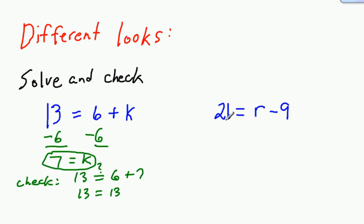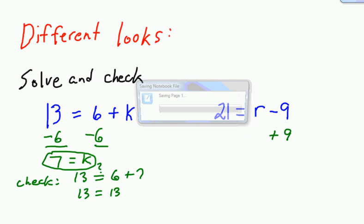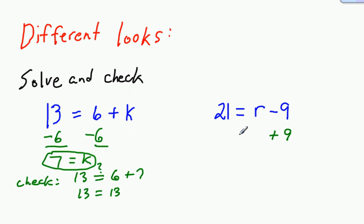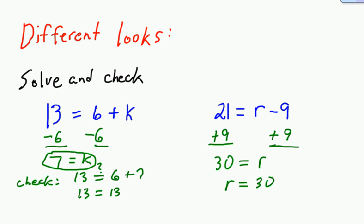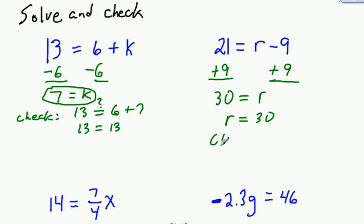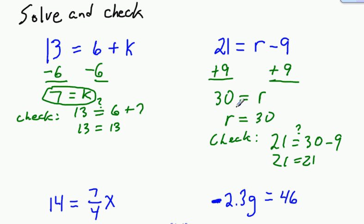Let's go with 21 equals r minus 9. On this one, I have 9 fewer than r on this side, so to get back to r I'm going to need to add 9 to both sides. That leaves me with r equals 30. Checking: does 21 equal 30 minus 9? 21 equals 21 — so we know that works out and we can consider it checked.